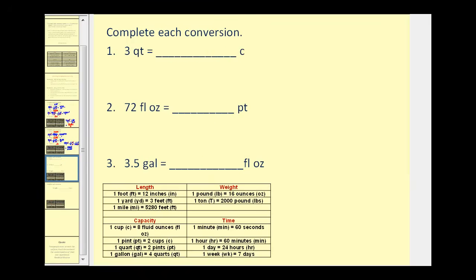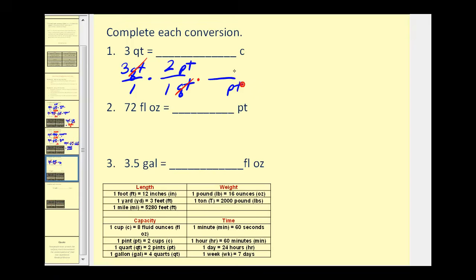Next, we want to convert three quarts to cups. Three quarts over one times a unit fraction. Looking at capacity, one quart equals two pints — that's the only conversion we have, so we do that first. Quarts go in the denominator, pints in the numerator, and the conversion is one quart equals two pints. Now quarts are gone but we're left with pints, so we multiply by another unit fraction: pints in the denominator, cups in the numerator. One pint equals two cups. The pints simplify out, leaving three times two times two equals twelve cups.